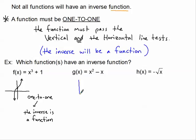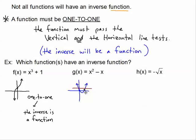Looking at the second one, this is the graph of a parabola. You could factor it to figure out that it crosses at zero and at one. I know that it's a function because it passes the vertical line test, but what fails to happen is it does not pass the horizontal line test — it fails it here and here and here, basically everywhere when you cross right through it. So this graph is not one-to-one, and since it's not one-to-one, the inverse will not be a function.